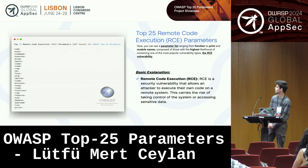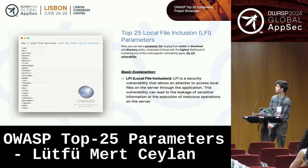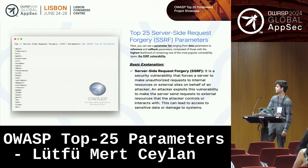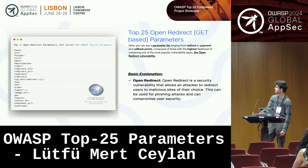The top 25 remote code execution parameters — here you can see functions, prints, and model names composed of the highest likelihood. Here you can see the LFI parameters, starting from 'cat', then action, downloads, and directory paths. Also SSRF parameters, ranging from data reference and callback, and open redirect — here are the redirects, payments, and callback endpoints.